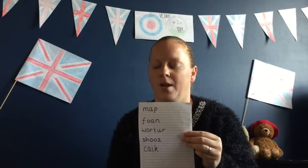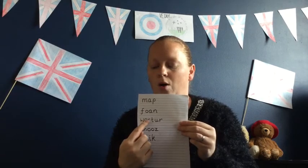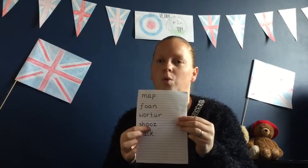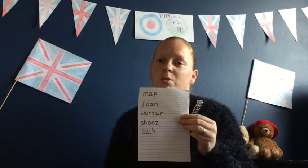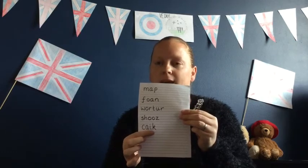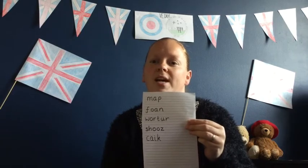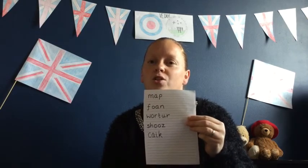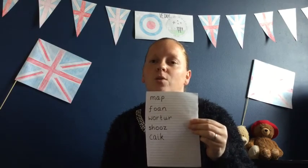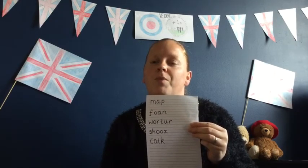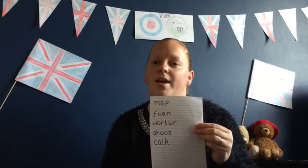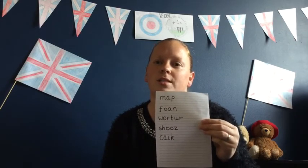I'm going to read my list to you: m-a-p, map; f-o-n, phone; w-o-t, water; sh-oos, shoes — although I think those would have to be snowshoes — and c-a-c, cake. These words might not be spelled correctly, mums and dads, but I've used the phonic knowledge that your children know. Don't worry if they don't spell the words correctly — what we want the children to do is use their own phonic knowledge and write the sounds that they hear. Don't forget to upload these lists to Seesaw.